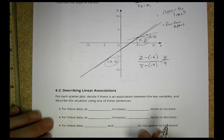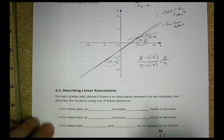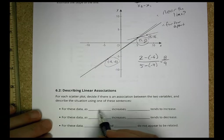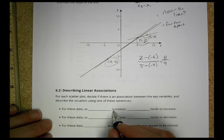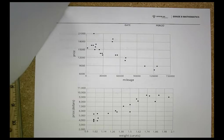Activity 2. For each scatterplot, decide if there's an association between the two variables and describe the situation using one of the sentences. So we're looking for data as something increases, something increases. So we're looking for increase-increase, increase-decrease, and not related. Let's see what you have on the next page.